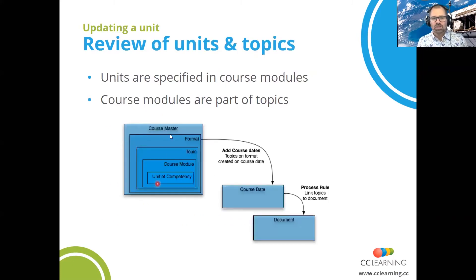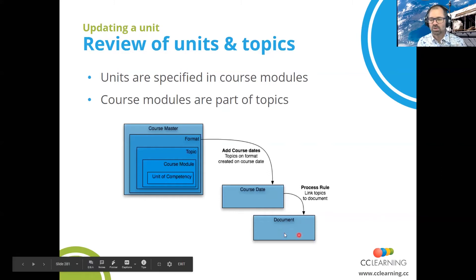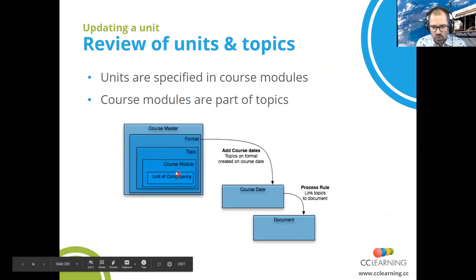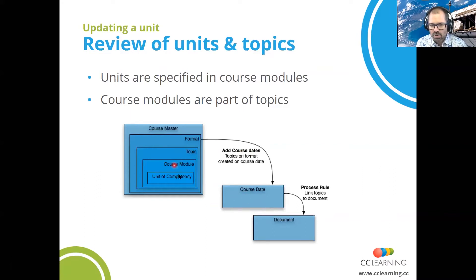So, reviewing the units and topics. Remember, units are specified in the course modules, which are specified on the topics, which are in the format of the course master. Upon creating a course state, those topics are copied to the course state from the course master or the format of the course master. Then the process rule copies them in — so effectively they're independent. Once they're on the document, these are independent document topics, independent from the course state topics. Updating the course module can be done at any time and will have a flow-on effect. Updating the topic does not.